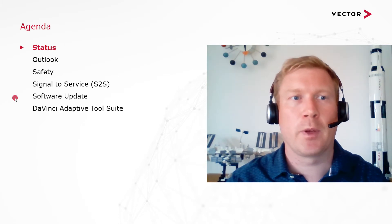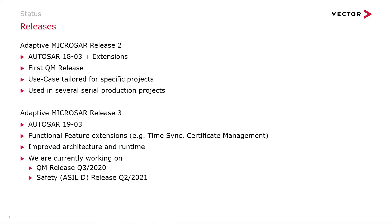The current status of our product development: our Adaptive MICROSAR Release 2 has been released and is used in several serial production projects — this was a major milestone for us this year. Release 2 is based on the 1803 standard, plus a couple of project-specific extensions in order to make the AUTOSAR standard usable for our customers.